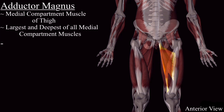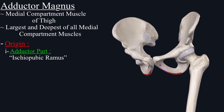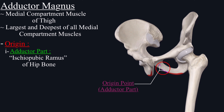First, we will discuss the origin. The adductor part of the adductor magnus muscle originates from the ischiopubic ramus of the hip bone. This marked pink area is the origin point of the adductor part, not the red one. The red one is the origin point of the hamstring part.